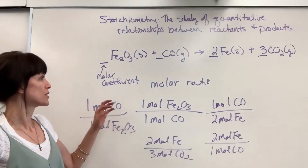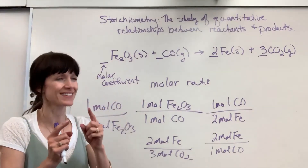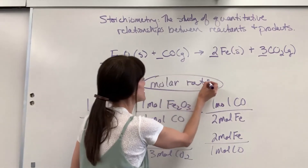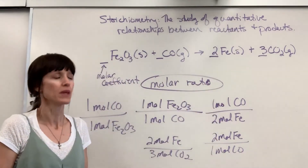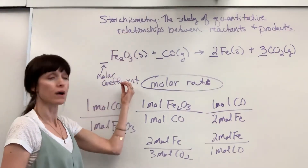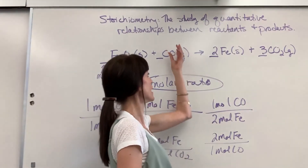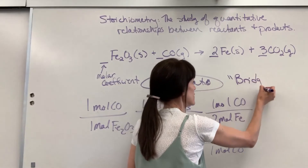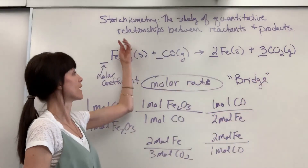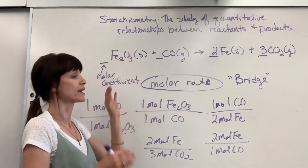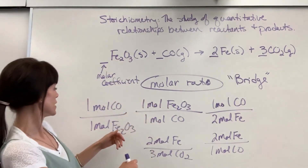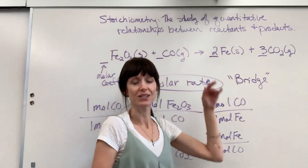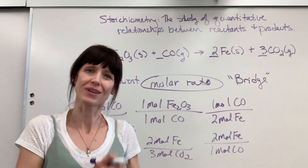Your molar ratios allow us to connect one compound to another. Again, the molar ratio is the heart of stoichiometry — it allows us to take information about one compound and find out information about a second compound. I've nicknamed this 'the bridge.' If I have information about the iron(III) oxide, I can walk a bridge using the molar ratio to find the information about the CO. That's the heart of stoichiometry.